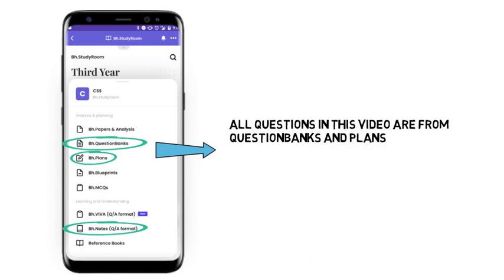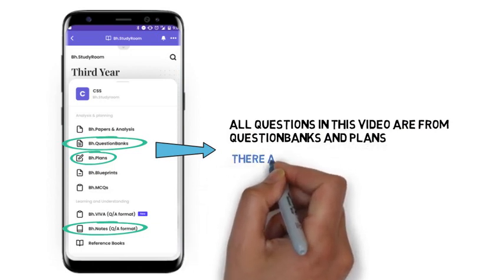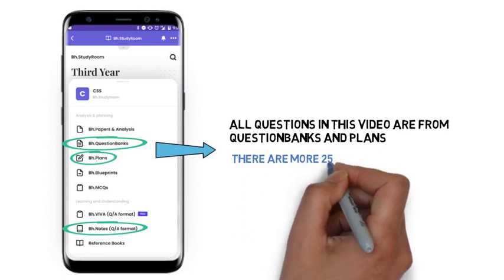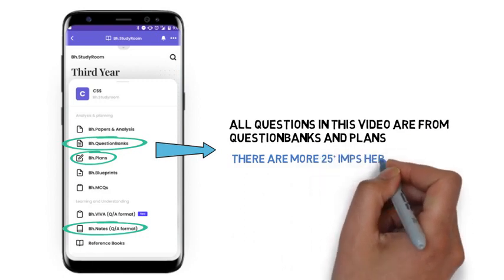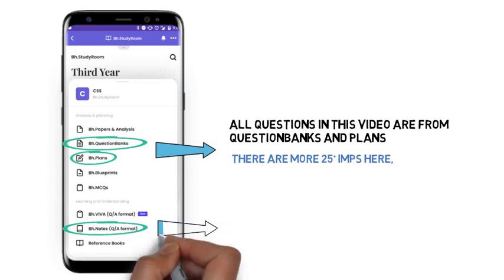So if I give you a summary, if you have not read anything, just go to the Brain Eaters app, first do plans, then do question banks, you are good to go for the exam.